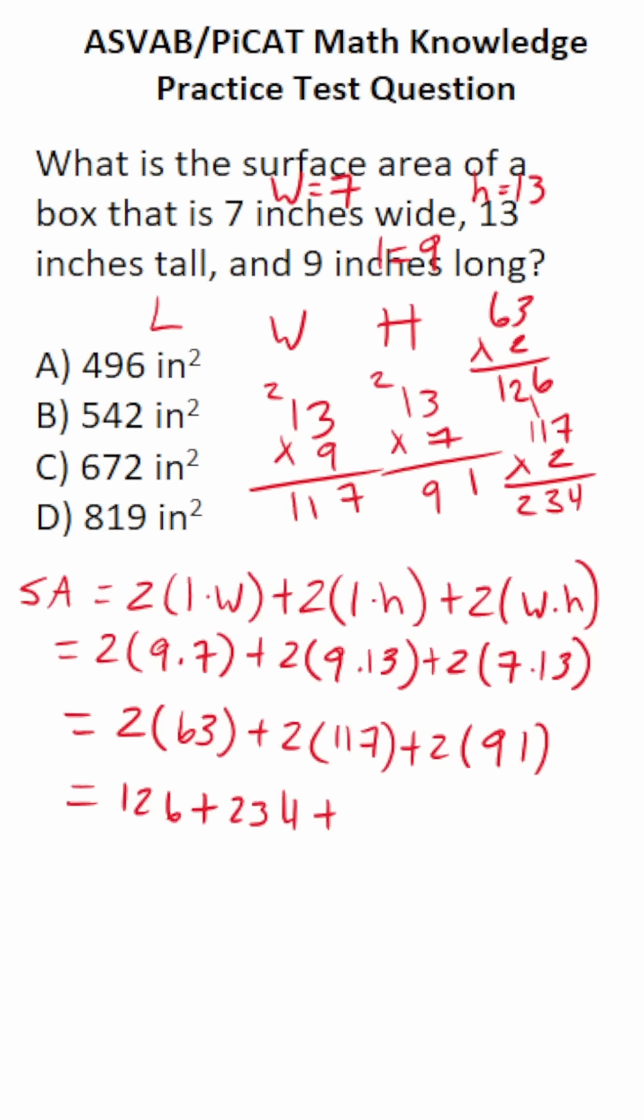Plus, we have 91 times 2. 1 times 2 is 2, 9 times 2 is 18. So this is 182. And finally, we're going to add all three things together. We have 126, 234, and 182 to add together.